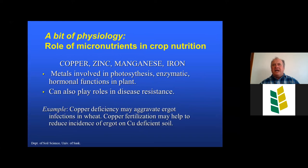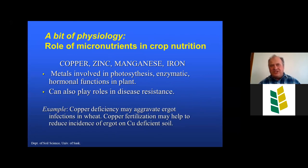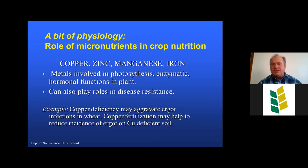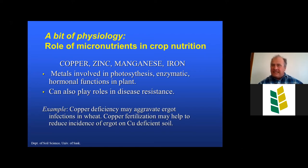The micronutrient metals — copper, zinc, manganese, and iron — are involved in important plant processes including photosynthesis, enzyme activation, and hormonal functions. Some micronutrients also play roles in disease resistance. A good example for wheat is copper deficiency: it can aggravate ergot infections because copper deficiency causes the floret to remain open longer, increasing susceptibility to infection. Research work done particularly in Alberta has shown that copper fertilization can help reduce ergot incidence on copper-deficient soils.